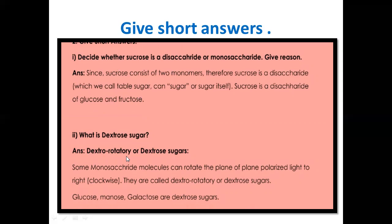Dextrose sugars or dextrorotatory sugars: some monosaccharide molecules can rotate the plane of plane polarized light to the right or in a clockwise direction. These are called dextrorotatory or dextrose sugars. Glucose, mannose, and galactose are dextrose sugars.